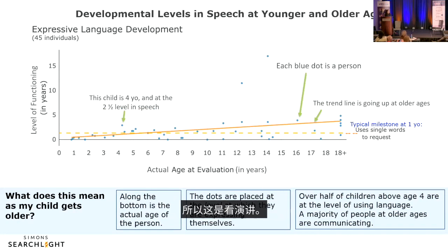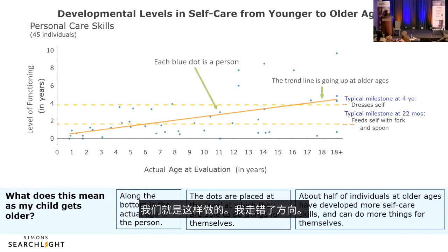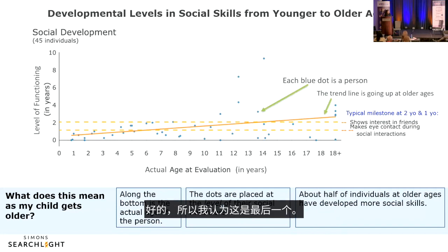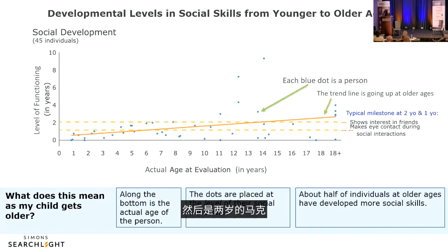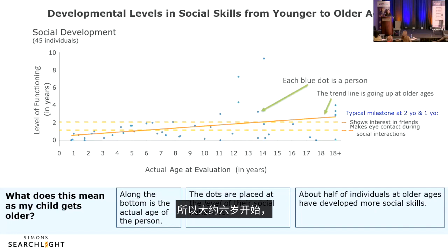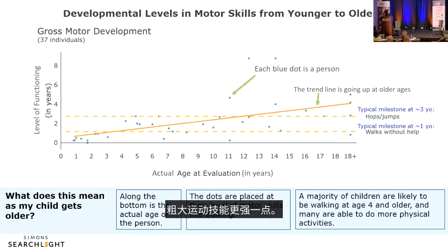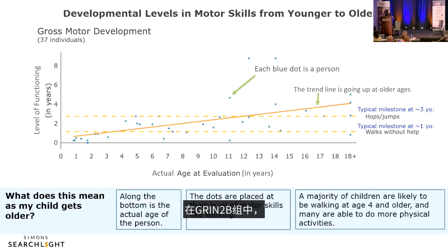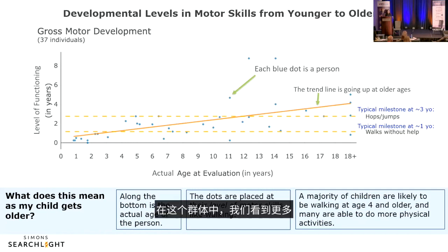Social development data shows similar patterns: making eye contact, expected in infancy, tends to emerge around 6 years in the GRIN2B group, with social interest in friends appearing later. Gross motor skills are relatively stronger: independent walking, typically at 1 year, occurs around age 3 in GRIN2B; hopping and jumping, typical at 3 years, occurs around ages 11–12.